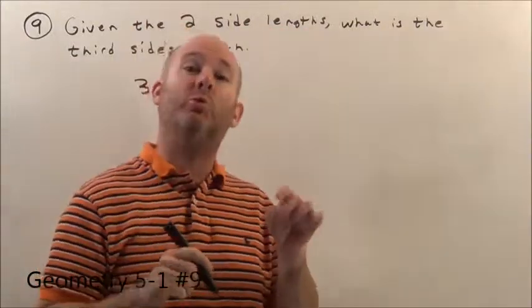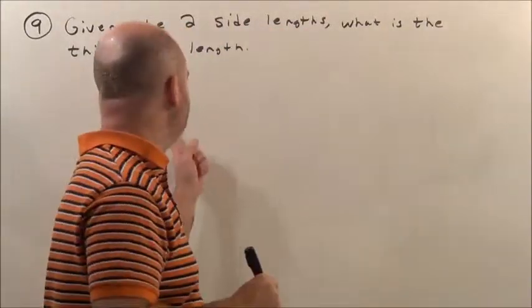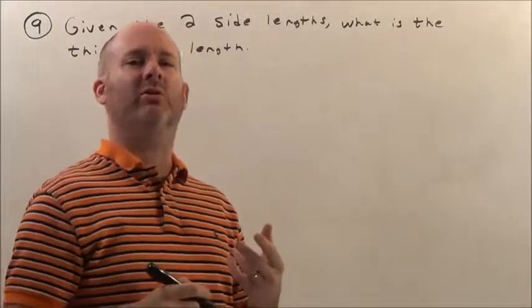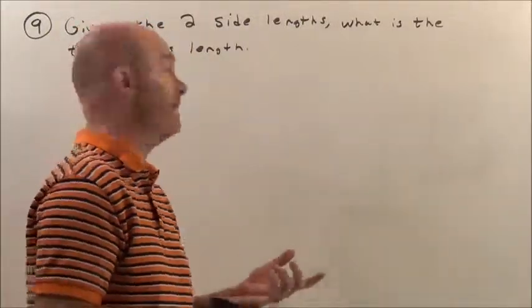So we're given two sides of a triangle of 3 and 5, and it says, what must the third side be, basically, between, because you don't know exactly what it is.